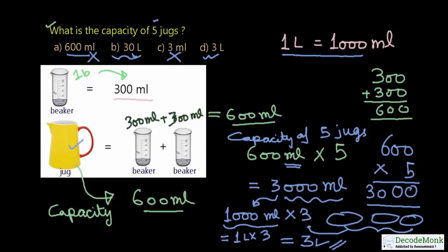During the real exam, you should arrive at such solutions quickly. This requires quicker thinking and more practice. The capacity of 5 jugs is 3000 milliliters, which can be written as 3 liters. The answer is option D, which is 3 liters.